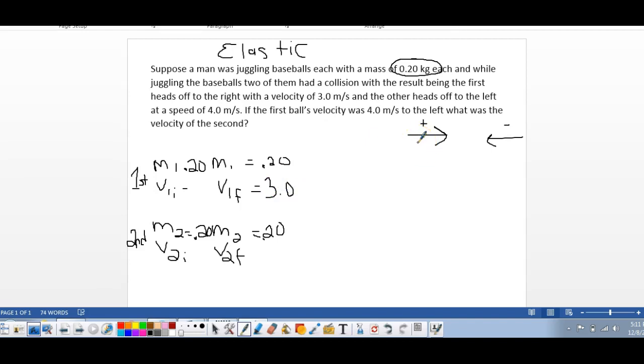So the heads off, that's going to be the final, make that 3.0. And the other, the second heads off to the left, so it's going to be final has speed of 4, so 4.0. If the first ball's velocity is 4.0 meters per second to the left, that's going to be negative 4 on this side. What is the velocity of the second? We want to know that.